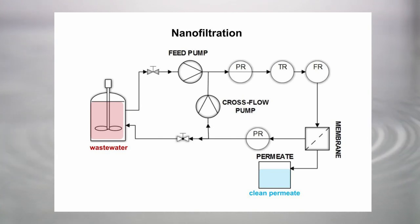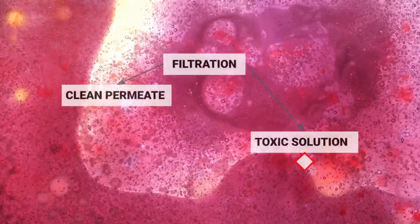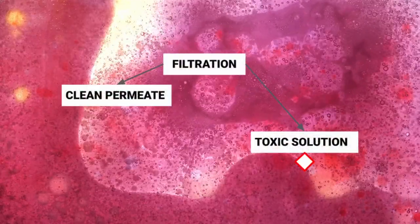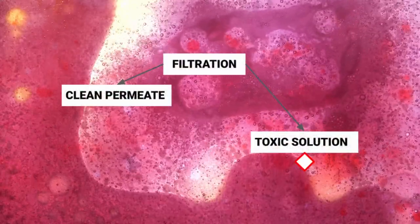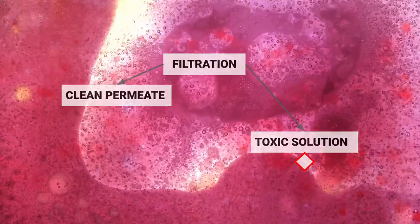Wastewater can be pressed through a graphene oxide membrane to obtain a clean permeate. Nevertheless, the pollutants retained by the membrane are now concentrated in a toxic solution, which needs now to be disposed of.